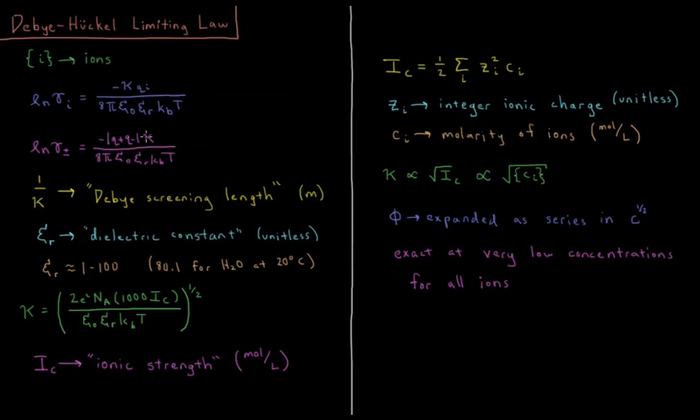The unit of κ is inverse meters, so 1 over κ is what's called the Debye screening length, which is a qualitative measure for the distance over which these ionic coulombic interactions occur in solvent.